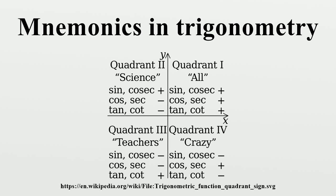In trigonometry, it is common to use mnemonics to help remember trigonometric identities and the relationships between the various trigonometric functions. For example, the sine, cosine, and tangent ratios in a right triangle can be remembered by representing them as strings of letters. For instance, S-O-H-C-A-H-T-O-A in English: Sine equals opposite divided by hypotenuse, Cosine equals adjacent divided by hypotenuse, Tangent equals opposite divided by adjacent. One way to remember the letters is to sound them out phonetically.